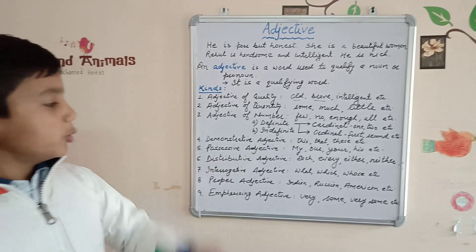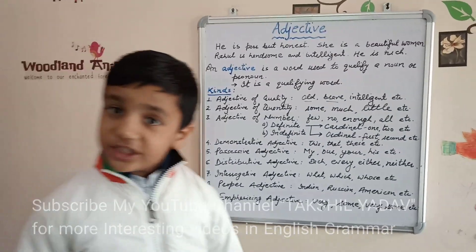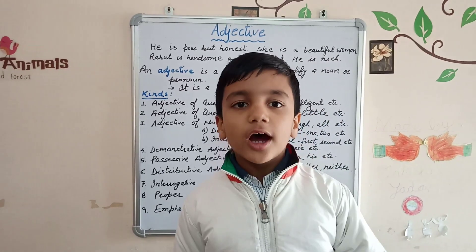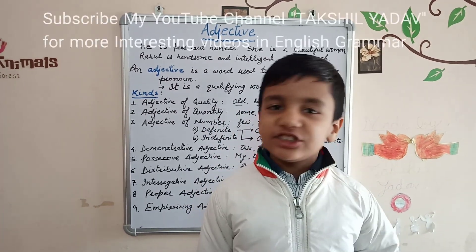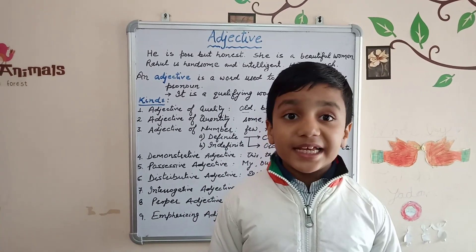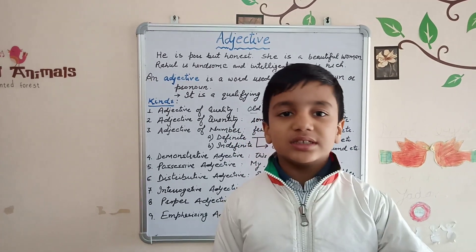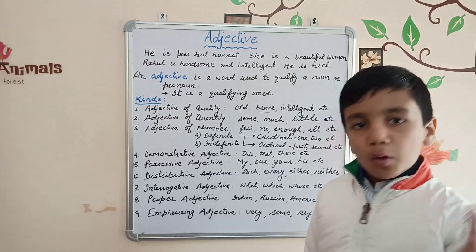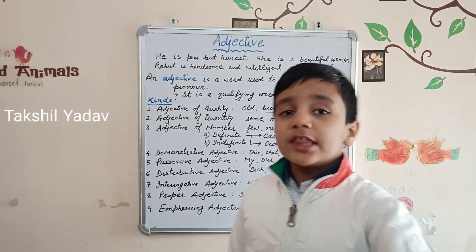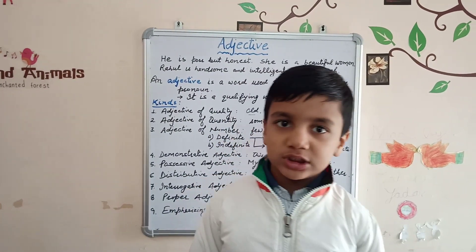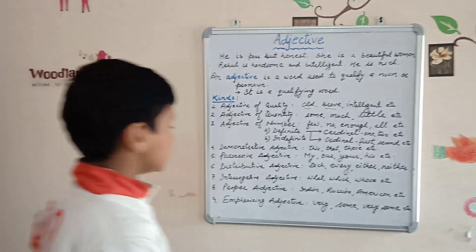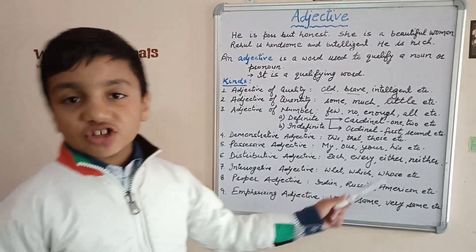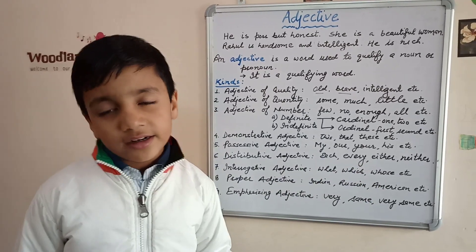Sixth, distributive adjectives. Each, every, either, neither are known as distributive adjectives when they are placed before nouns — not everywhere, only when they are placed before nouns. Then they are known as distributive adjectives. For example: each, every, either, and neither.